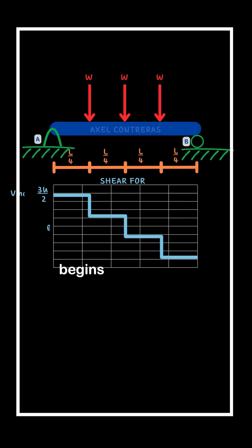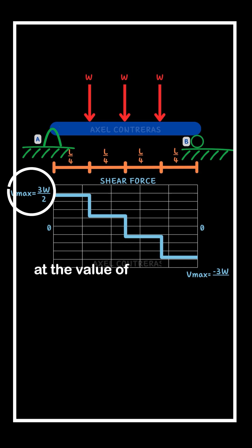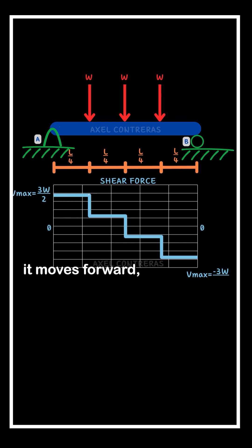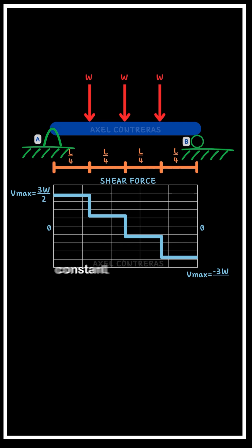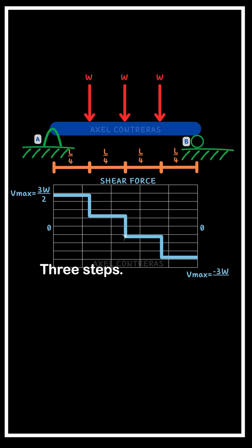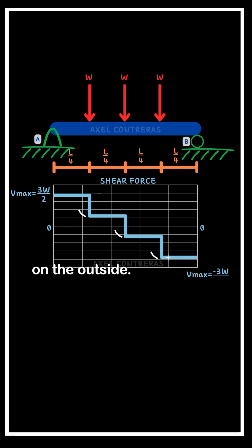The shear force begins with the first step. Once more at the value of the reaction, it moves forward, then drops, sensing the presence of the first load. It remains constant and drops again, two more times. Three steps, three marks of what's happening on the outside.